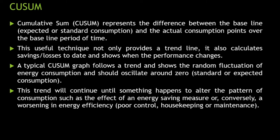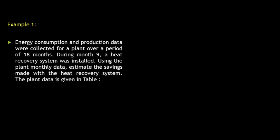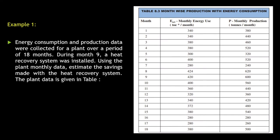This trend will continue until something happens to alter the pattern of consumption, such as the effect of an energy saving measure, or conversely a worsening in energy efficiency — that is, if there is poor control, poor housekeeping or maintenance, then the fluctuations will be too much. To start with, I have this example where energy consumption and production data has been given for 18 months. During the 9th month, a heat recovery system was installed. Using the plant monthly data, we will estimate the savings made with the heat recovery system.